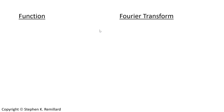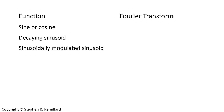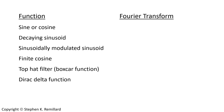A tool worth having in your physics and engineering bag of tricks is the ability to visualize the Fourier transforms of certain functions. There are a lot of functions, and I'm going to summarize a few of them here: the Fourier transform of the sine or the cosine, a decaying sinusoid, a sinusoidally modulated sinusoid, a finite cosine, a boxcar function or top hat filter, a Dirac delta function, a triangle wave, and the Fourier transform of a Gaussian. I'll go over what the transform of each one of these functions is, with some justification, and how you can mentally see those Fourier transforms without doing the math.